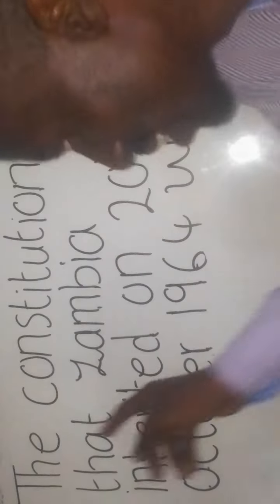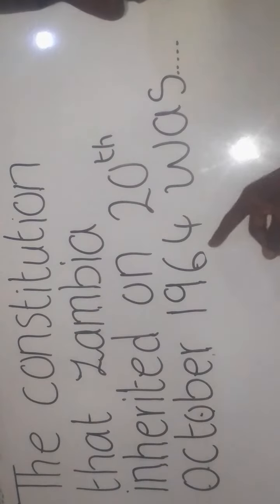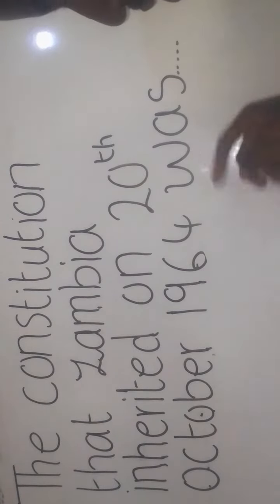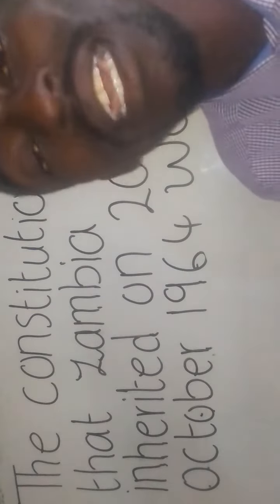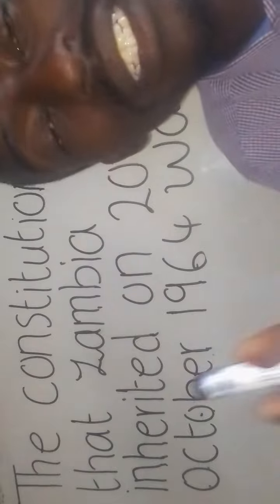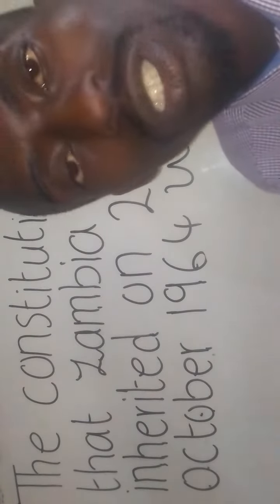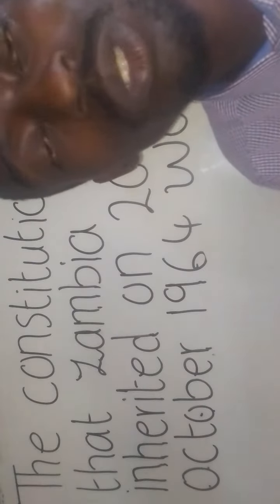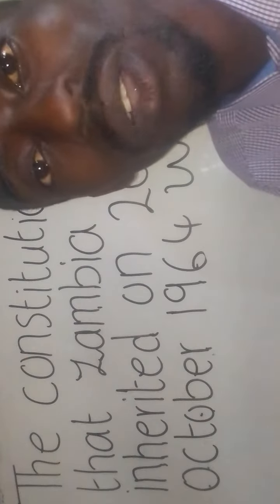The education question says the constitution that Zambia inherited on 25 October 1964 was taxed. You need first to understand that when they say constitution, it is a set of rules which governs a country. We have two types of constitution: a written constitution and an unwritten constitution, which may be flexible or rigid in nature.